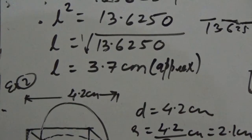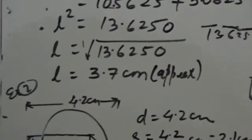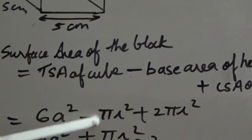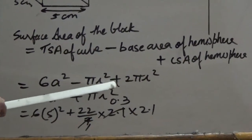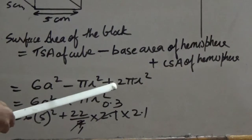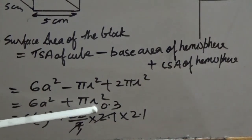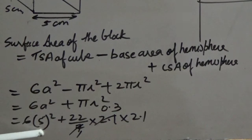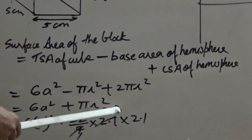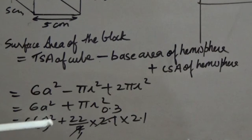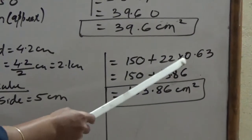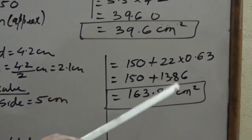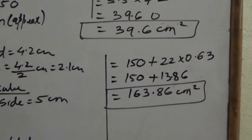Surface area of block = TSA of cube − base area of hemisphere + CSA of hemisphere = 6A² − πr² + 2πr². Substituting A = 5 and r = 2.1: 6×25 − πr² + 2πr² = 150 + πr². After calculating with π = 22/7 and r = 2.1, we get the total surface area of the decorative block as 163.86 cm².